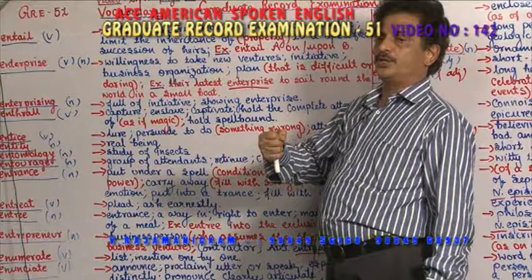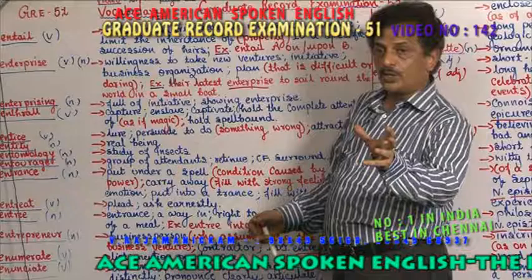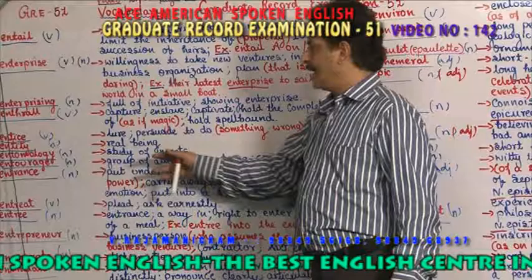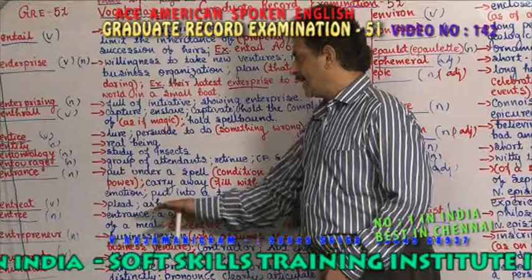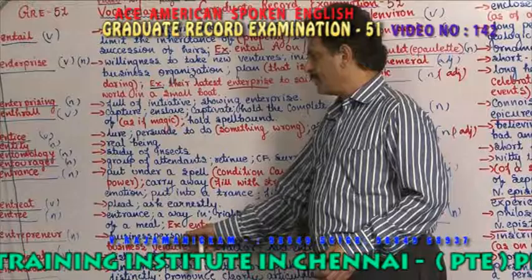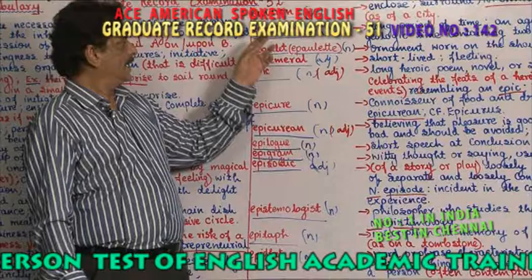Summary recap: entail means making certain necessary arrangements. Enterprise — willing to take new risk-taking things. Enterprising — full of initiative. Enthral — you are enslaving, capturing, attracting. Entice — luring somebody to do something. Entity — a real being. Entomology — study of insects. Entourage — a group of attendants or assistants. Entrance — making others fall under magic. Entreat — pleading and asking. Entree — the entrance. Entrepreneur — the person who takes the risk in business. Enumerate — listing. Enunciate — announcing.